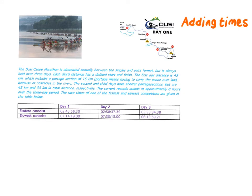So in math lit, we get this in a context where different times are given. So here we have an explanation about the Dusi canoe marathon that you might be familiar with and also the details of the fastest canoeist versus the slowest canoeist. Now, you could be asked to calculate the total time it takes for the fastest canoeist to finish this race. And when done manually, this can be quite a lengthy process, but I'm going to go through it with you anyway.